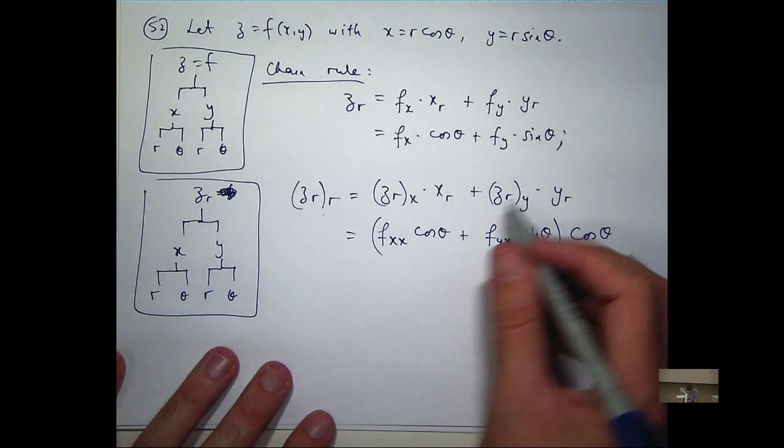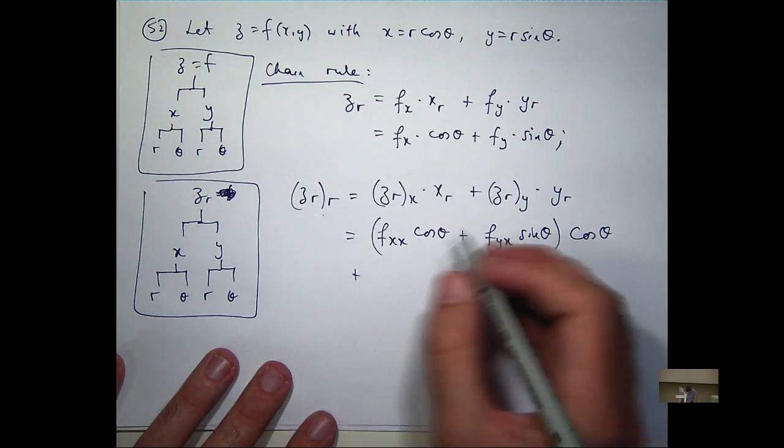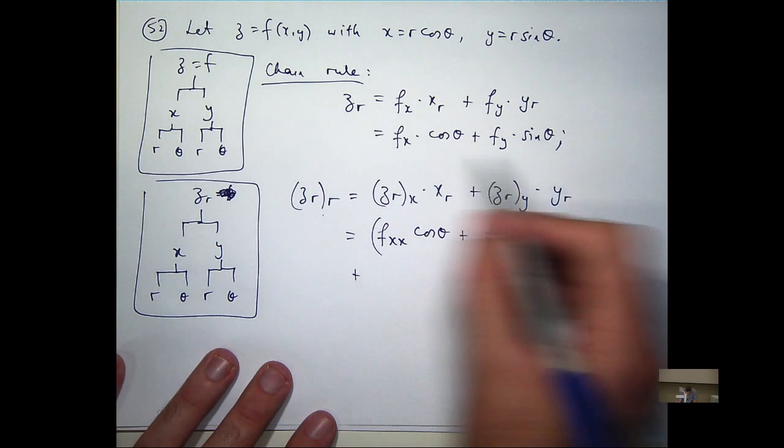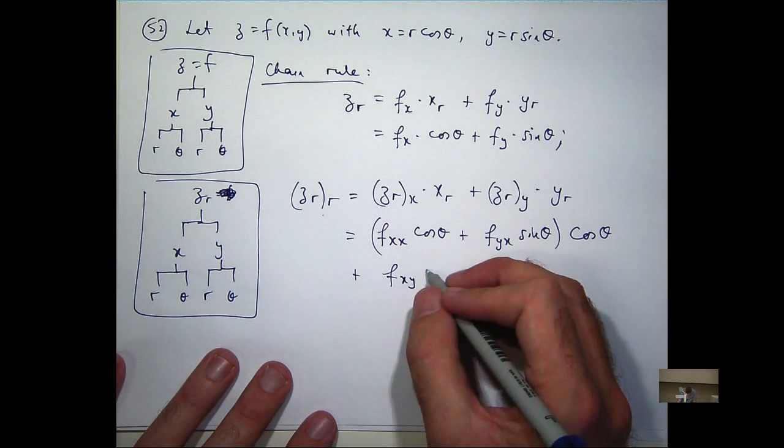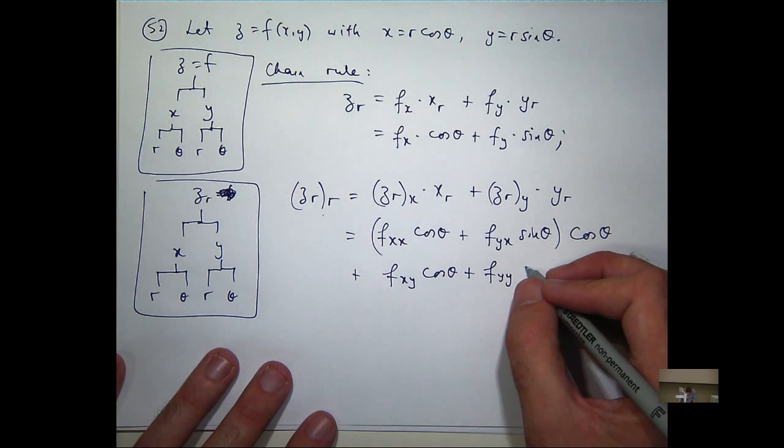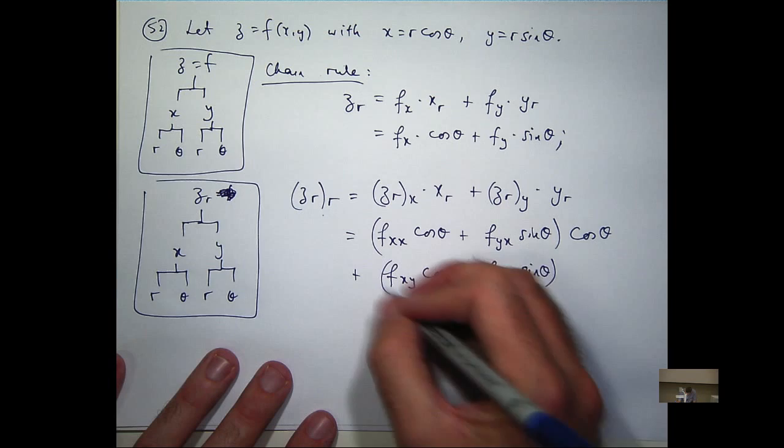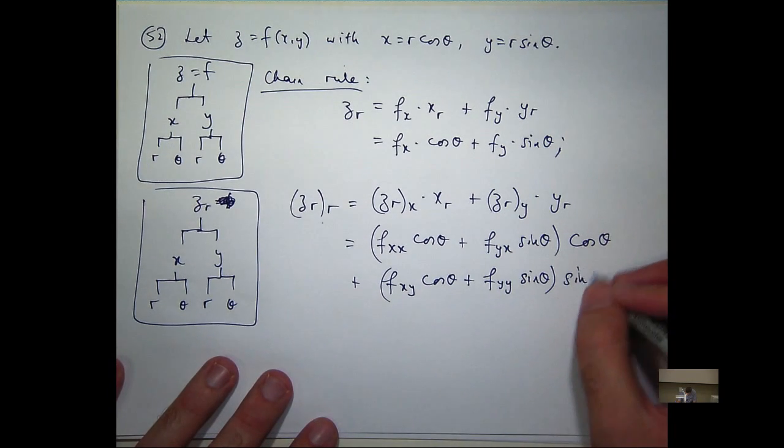So we're at this second term. Just repeat the process, but just differentiating with respect to y this time. So if I differentiate each of these terms with respect to y, I'll get this. And lastly, y sub r is going to just be sine theta.